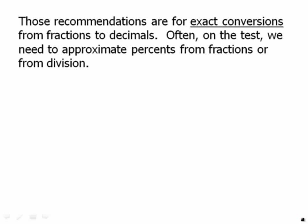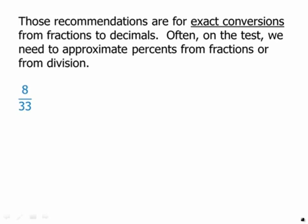Those are exact conversions from fractions to decimals. Often on the test, we need to approximate percents from fractions or from division. For example, eight over thirty-three. If we multiply the numerator and denominator by three, we get twenty-four over ninety-nine. Twenty-four over ninety-nine is going to be slightly larger than twenty-four over one hundred. Twenty-four over one hundred is twenty-four percent, so eight over thirty-three is going to be slightly larger than twenty-four percent. That's a very good approximation.